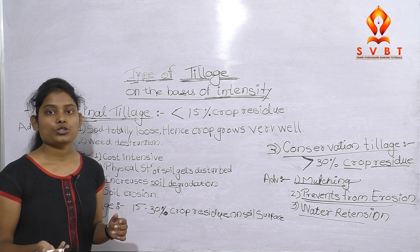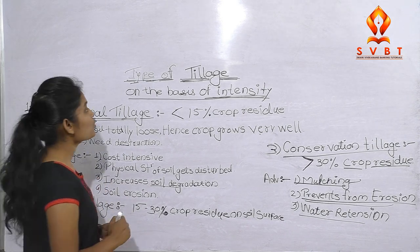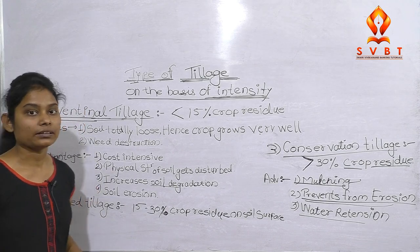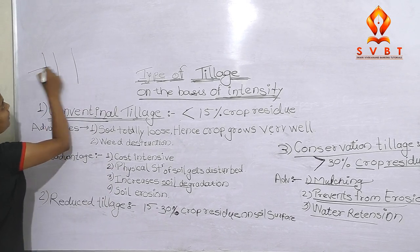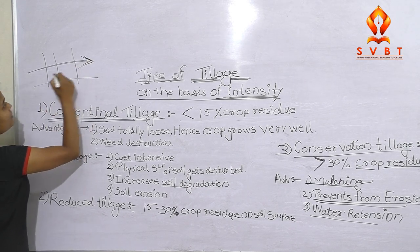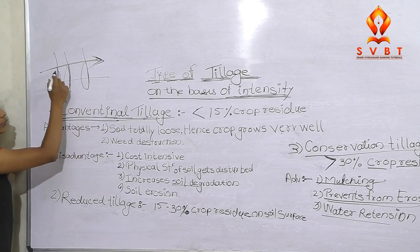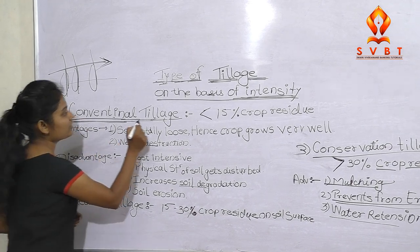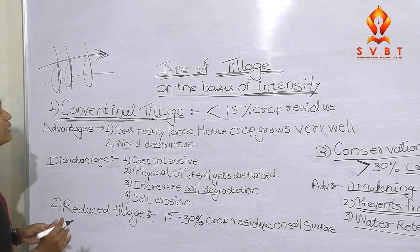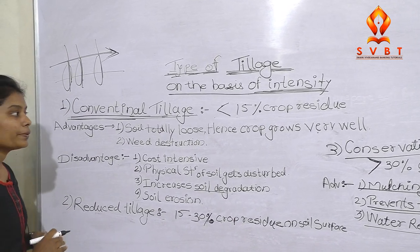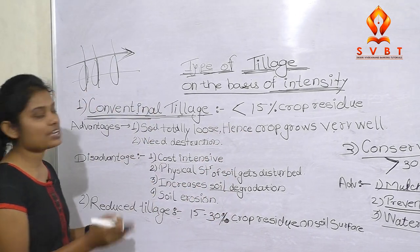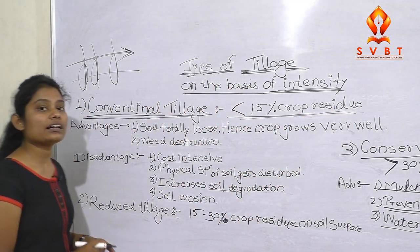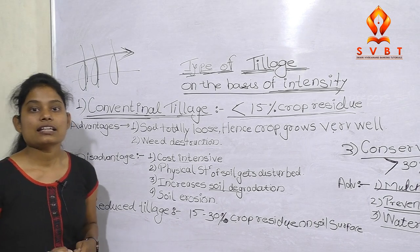Tillage is classified by type. On the basis of intensity, there are types of tillage operations. When we are harvesting the crop, we have stubbles in the surface of the soil. There are three types: first is conventional tillage, which we have done for years and years. We have the whole soil turned. There are residues in the soil, and there are less residues on the surface in conventional tillage.